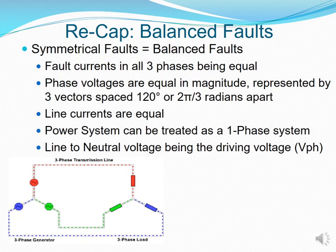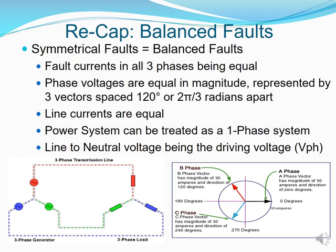Looking at the bottom, I've put in a star-to-star system where you can see it going from red to the other red phase from source to load, and does the same for your green as well as your blue phase. That represents the phasor diagram where you can see your A, B, and C phases in vector form, spread at 120 degrees from each other. This concludes what we would have as a balanced fault.